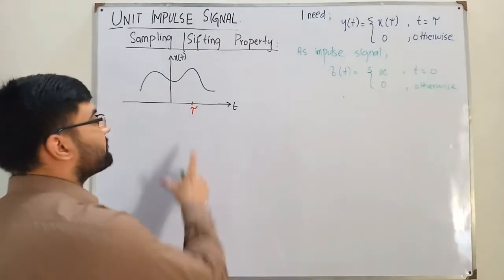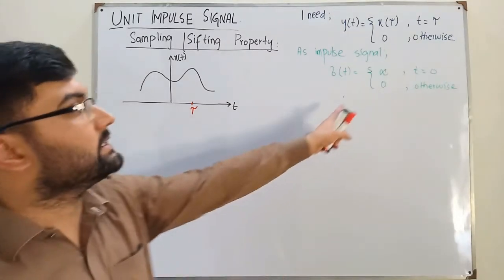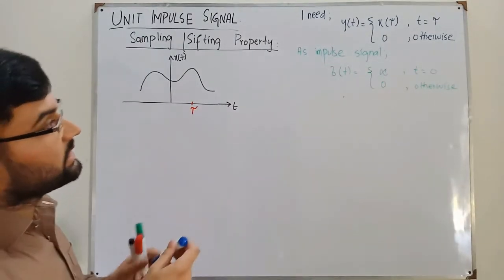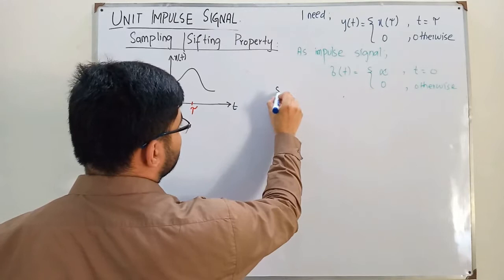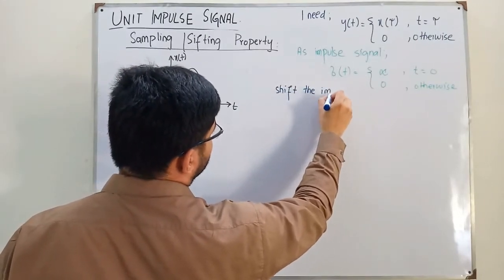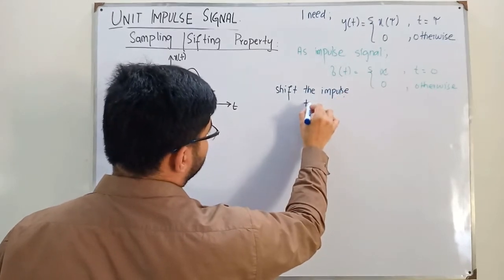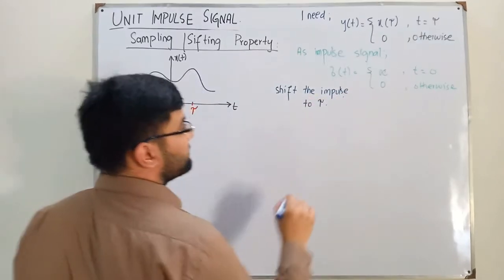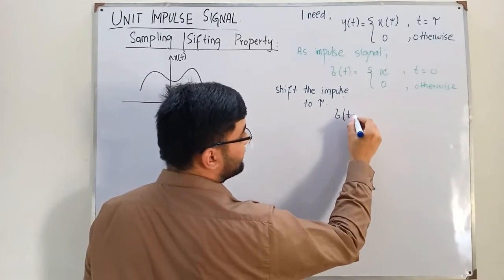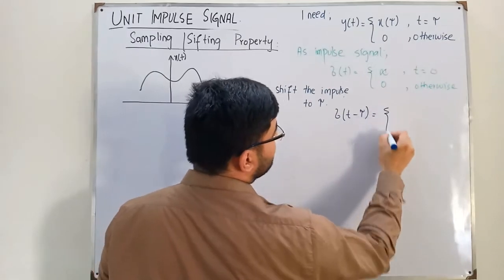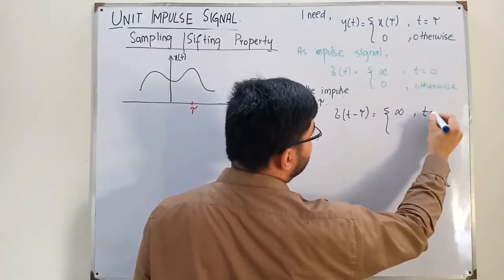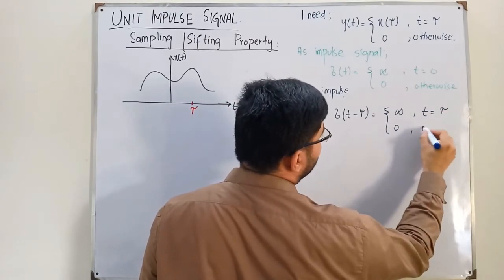Now if I shift this impulse signal to the value of tau — the impulse signal is currently located at t equals zero, but if I shift the impulse to tau, which means I right-shift it, then delta of t minus tau is undefined at t equals tau and is zero otherwise.